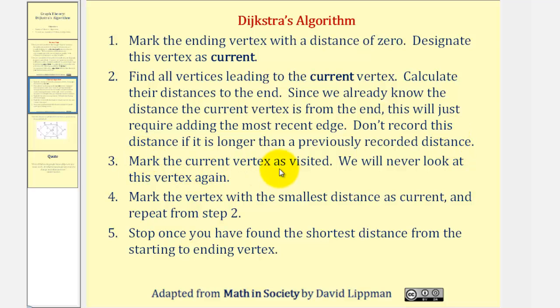Three, we'll mark the current vertex as visited. We will never look at this vertex again. And then four, we mark the vertex with the smallest distance as current and repeat from step two.